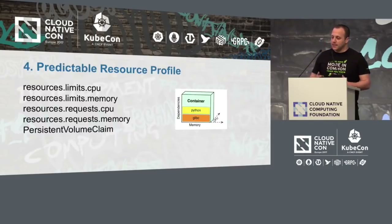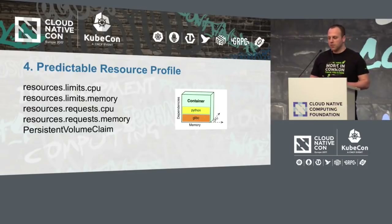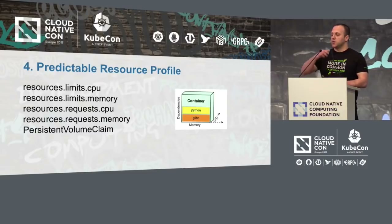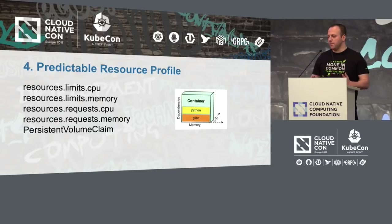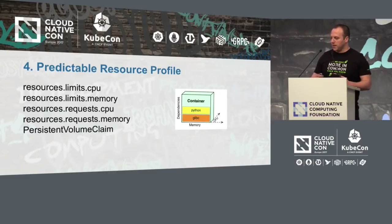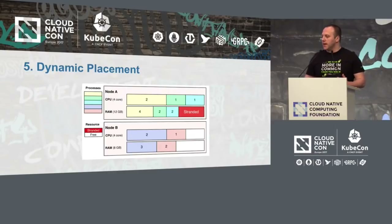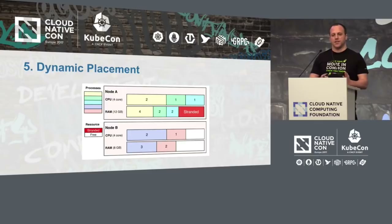The next fundamental prerequisite is to have a predictable resource profile. What I mean is you should see your Docker container not only as a box with all its dependencies, but more like a multidimensional box with a memory dimension and a CPU dimension at runtime. You have to pass that information to the platform so it can do dynamic placement — meaning you don't have to think about placing microservices on specific hosts; you just trust your scheduler to do the best placement for you.